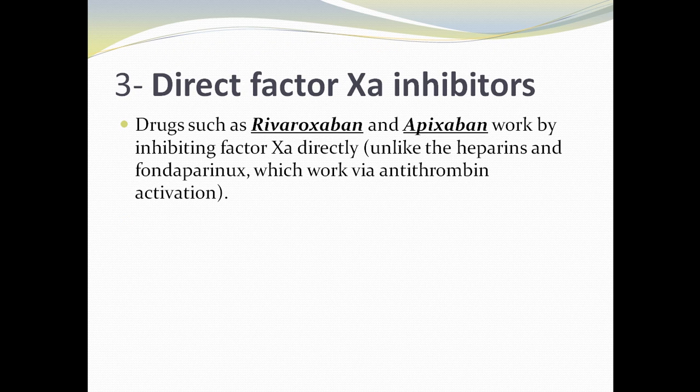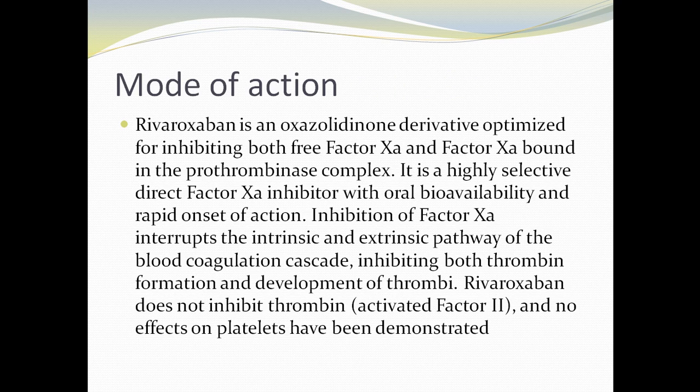Third type: direct factor Xa inhibitors. Drugs such as rivaroxaban and apixaban work by inhibiting factor Xa directly, unlike heparin and fondaparinux which work via antithrombin activation. Rivaroxaban is an oxazolidinone derivative optimized for inhibiting both free factor Xa and factor Xa bound in the prothrombinase complex. It is a highly selective direct factor Xa inhibitor with oral bioavailability and rapid onset of action. Inhibition of factor Xa interrupts the intrinsic and extrinsic pathways of the blood coagulation cascade, inhibiting both thrombin formation and development of thrombi. Rivaroxaban does not inhibit thrombin (activated factor 2) and no effect on platelets has been demonstrated.